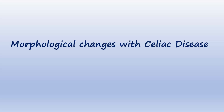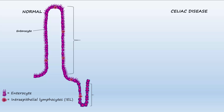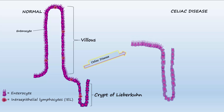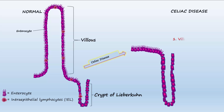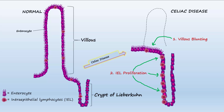What are the morphological changes of the small intestine observed in celiac disease? In a healthy small intestine, enterocytes are organized to form villi and crypts. With celiac disease, the villi will disappear — this is called villus blunting. The dotted line shows where the villus used to be. Loss of villi decreases the surface area available for nutrient absorption. Additionally, proliferation of epithelial cells and lymphocytes in the crypt causes crypt elongation.